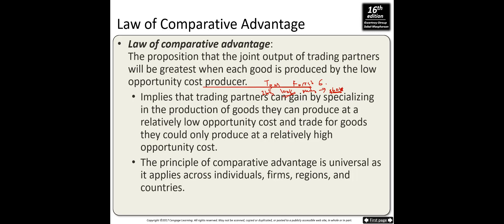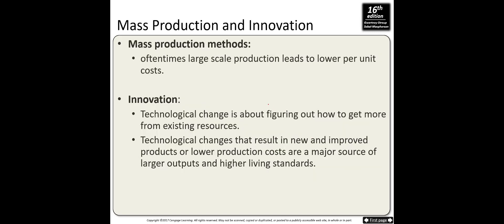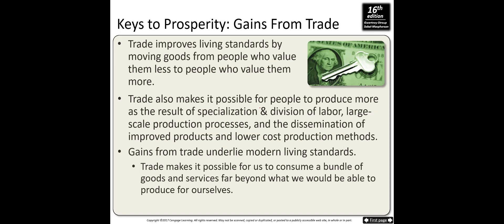Tom should act in commercials because his opportunity cost of mowing is very high. With comparative advantage, we can also benefit from mass production — Forrest Gump could expand his business to mow neighbors' lawns and invest in better machines, lowering costs. Mass production lowers cost; innovation and technological change figure out how to get more from existing resources, resulting in new and improved products and lower production costs.